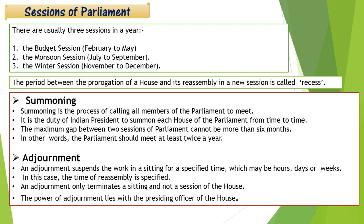Now there are also sessions of Parliament. Generally three sessions are held in a year. The first is the Budget Session, which is from February to May. The Monsoon Session is from July to September. The Winter Session is from November to December. The period between the prorogation of a house and its reassembly in a new session is called recess. Summoning is the process of calling all members of Parliament to meet — it is the duty of the Indian President to summon each house from time to time. The maximum gap between two sessions of Parliament cannot be more than six months.